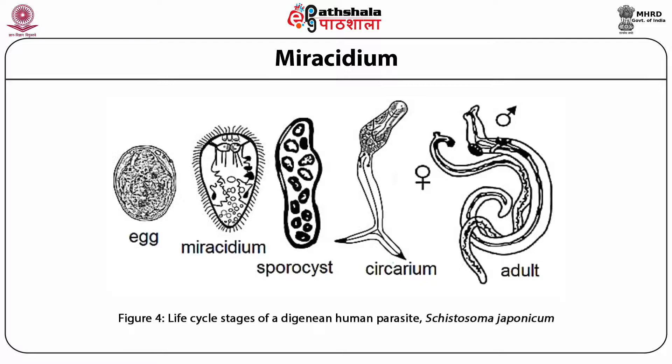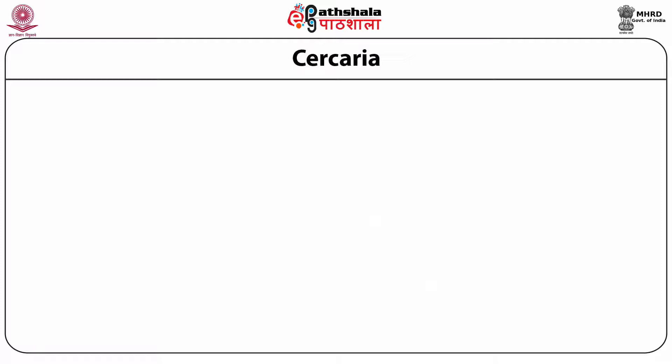This figure represents life cycle stages of the digenean human parasite Cystosoma japonicum: egg, miracidium, sporocyst, cercaria, and adult male and female.